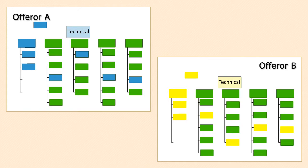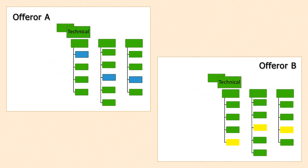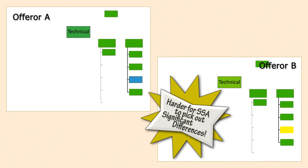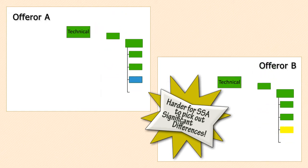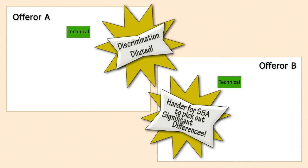So you can see in this simple example how the substantial differences in merit — outstanding versus marginal — tend to get diluted or even lost altogether if there are too many aspects being evaluated which are not true discriminators. The result is that it is harder for the SSA to pick out the significant differences between the competing proposals. This is especially true as the ratings get rolled up to higher levels. In this example, the visibility of the discrimination between offerors is lost altogether at the factor level, where both offerors are rated the same in the technical factor, and clearly not as obvious at the sub-factor level.